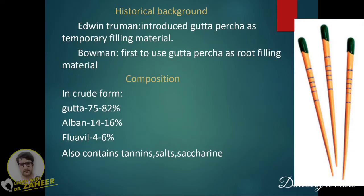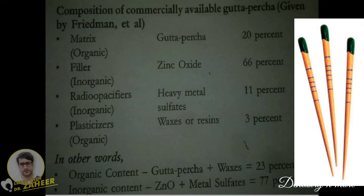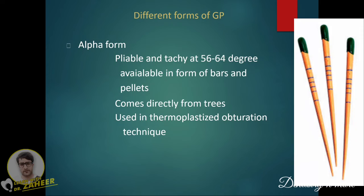Historical background: Edwin Truman introduced gutta percha as a temporary filling material, and Bowman first used it as a root canal filling material in its crude form. In its crude form, gutta percha contains 75–82% gutta, 14–16% albane, 4–6% flavacene, and also saccharine tannins. As a gutta percha filling material, the composition is: organic matrix — gutta percha 20%, filler zinc oxide 66%, inorganic radio-opacifiers (heavy metals) ~11%, and plasticizers/waxes/resins ~3%. In summary, organic content is about 23% and inorganic content about 77%.